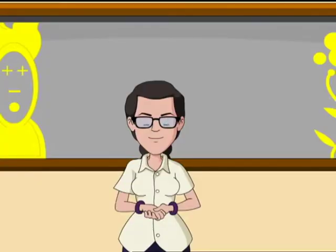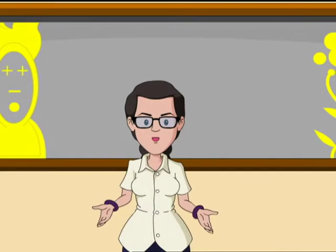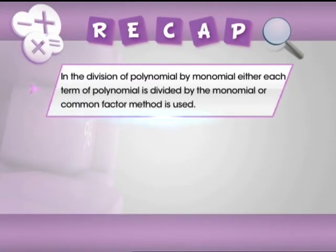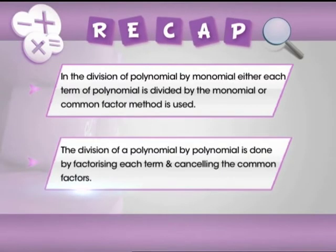Time to refresh our memories, so let's hit the recap button and revise everything we have learned today on division of polynomials. In this module we learned: in the division of polynomial by monomial, either each term of polynomial is divided by the monomial or common factor method is used. The division of a polynomial by polynomial is done by factorizing each term and canceling the common factors.